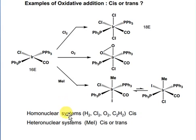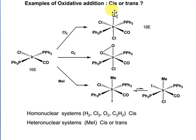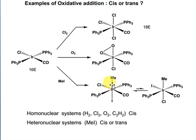There is an empirical rule: whenever there is a homonuclear or non-polar system, the atoms or ligands will add cis to each other. For example, Cl–Cl — both chlorine atoms are added cis. Oxygen is also non-polar, so cis addition occurs. But in the case of MeI, this is a polar entity, so Me and I will be trans to each other at 180 degrees.